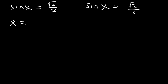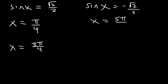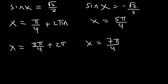Sine is positive in quadrants 1 and 2, so x could be π/4 and 3π/4. Sine is negative in quadrants 3 and 4, so it could also be 5π/4 and 7π/4. To write expressions for all solutions, add 2πn to every answer: x = π/4 + 2πn, x = 3π/4 + 2πn, x = 5π/4 + 2πn, and x = 7π/4 + 2πn.